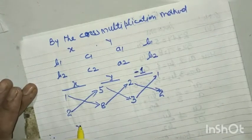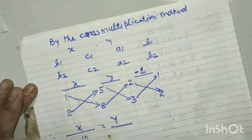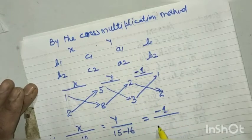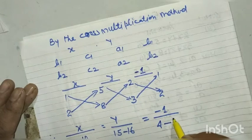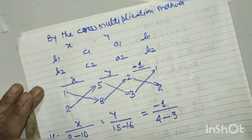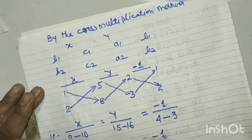That is: x upon (1×8 − 2×5), which is 8 − 10, is equal to y upon (5×3 − 8×2), that is 15 − 16, is equal to −1 upon (2×2 − 3×1), that is 4 − 3.